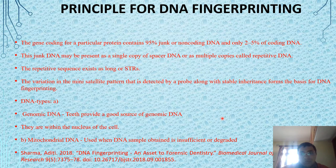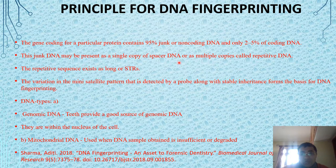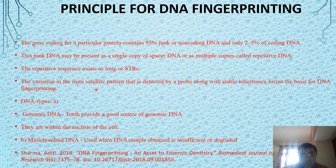The principle of DNA fingerprinting: in a particular protein-coding gene, 95 percent is junk DNA that is non-coding — only two to five percent of DNA is coding. This junk DNA is present as a single copy of special DNA or multiple copies, called repetitive DNA. The repetitive sequences exist as short tandem repeats. The variation in these minisatellite patterns detected by a probe, along with their stable inheritance, forms the basis of DNA fingerprinting. This line is very important as it is the foundation of DNA fingerprinting techniques.